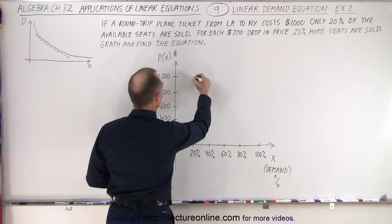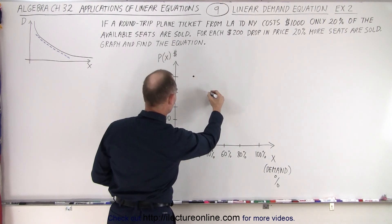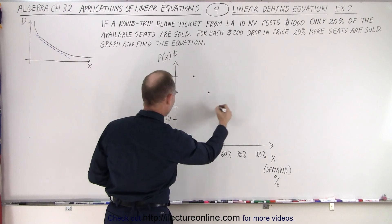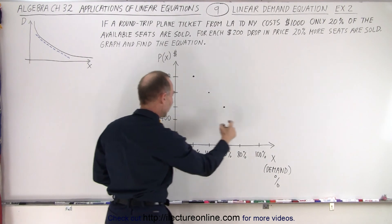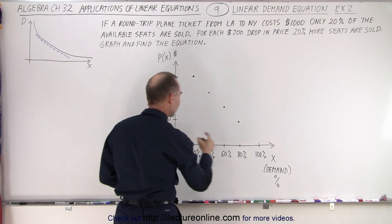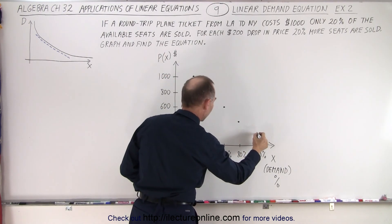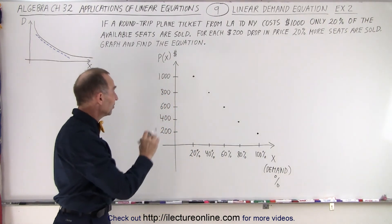So at $1,000, we fill 20% of the seats. At $800, we sell 40% of the seats. At $600, we'll sell 60% of the seats. At $400, we'll sell 80% of the seats. And when the price goes all the way down to $200, everybody will want to fly. Well, not quite everybody, but enough to fill the entire plane.